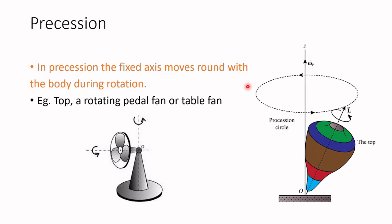Next is a type of motion called precession. It's a kind of rotatory motion in which the axis is moving along with the body. Even though the axis is fixed at one point, the axis moves along with this top — you can see the axis moves along this circle. A top is an example. Similarly, a rotating pedal fan or table fan is an example. The leaves of the fan rotate perpendicular to its axis, and about this axis it has a movement. This fixed axis moves along with the body, similar to the top. So in precession, the axis moves around with the body during rotation.